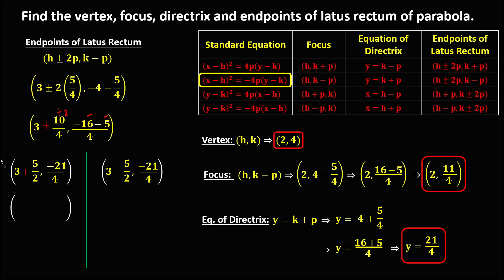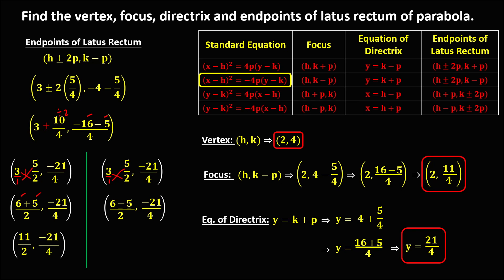To simplify the x-coordinates using cross multiplication: for the first endpoint, 3 over 1 plus 5 over 2 — so 3 times 2 is 6 and 1 times 5 is 5, over 2 — giving 11 over 2. For the second endpoint, 3 times 2 is 6 and 1 times negative 5 is negative 5, over 2 — giving 1 over 2. So the two endpoints of the latus rectum are (11/2, negative 21/4) and (1/2, negative 21/4).